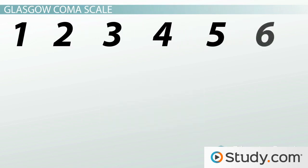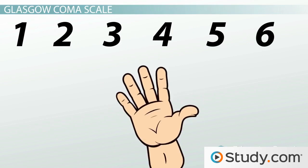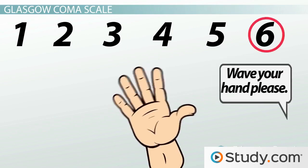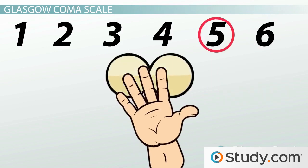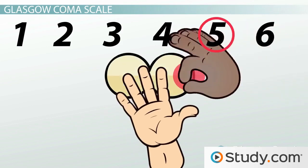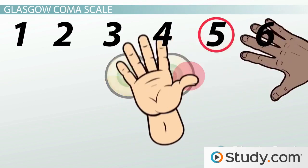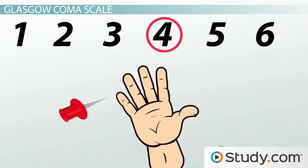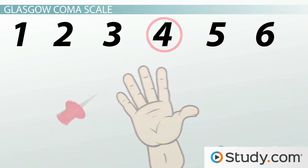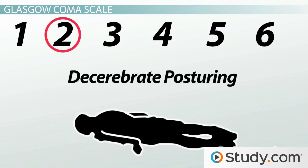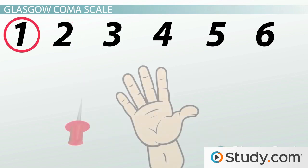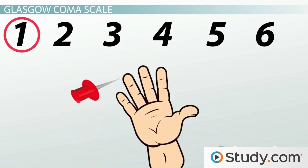Finally, for the motor response, there are 6 total grades. A 6 is given when commands for movement are obeyed, a 5 when a person can localize a painful stimulus by purposefully moving towards it, a 4 if they simply withdraw from the painful stimulus, a 3 for abnormal flexion in response to pain, a 2 if the painful stimulus causes extension instead of flexion, and a 1 if there is no response to pain.